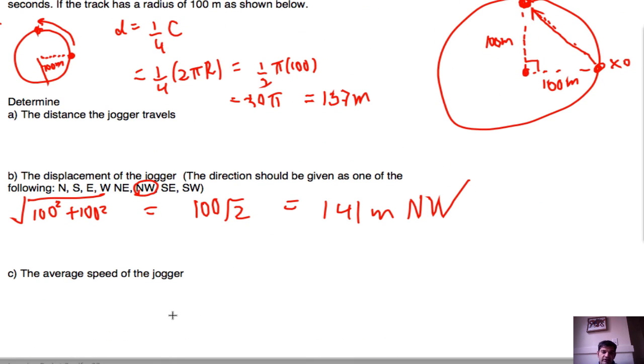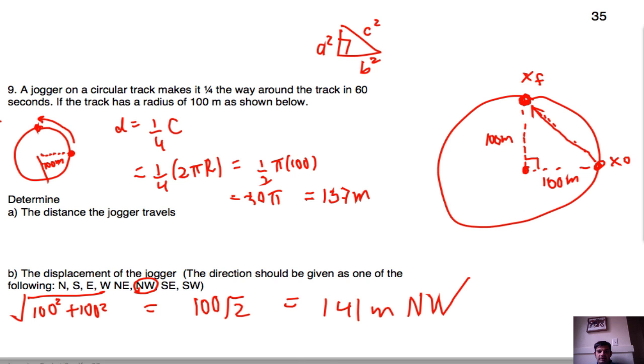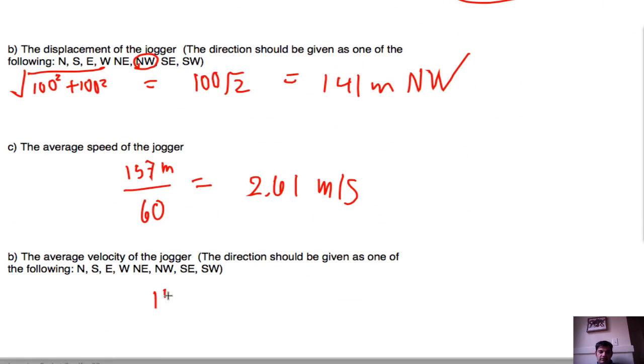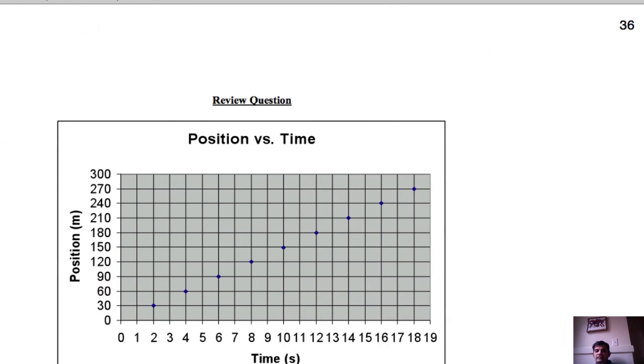All right. Then we go for the average speed of the jogger. So that's going to be 157 meters, distance equals rate times time. And we're told that that's in 60 seconds. So 157 divided by 60 gives me 2.61 meters per second. And then when we go for the average velocity, that's going to be 141 divided by 60, because this is distance over time, and that's displacement over time. And so 141 divided by 60 ends up being 2.35 meters per second. And you'll find that's kind of a general rule that average velocity is always equal to or slower than average speed.